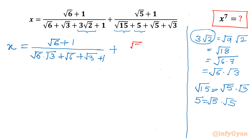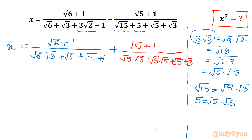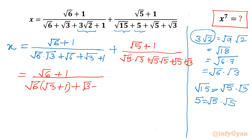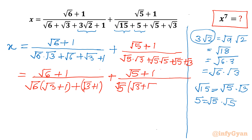For the second term, we write (√5 + 1) divided by (√15 = √5·√3), and 5 is √5·√5, then √5 + √3. Now taking √6 common in the first denominator gives (√3 + 1) in the bracket, and the last two terms are already (√3 + 1). For the second fraction, taking √5 common gives (√3 + √5) in the bracket, and the remaining two terms are already (√5 + √3).